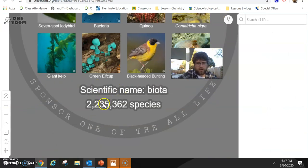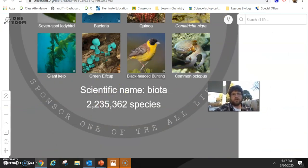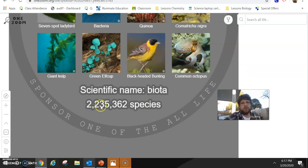2,235,362. So, so far, we have found 2,235,362 species. That's a lot. I can't even count that high.